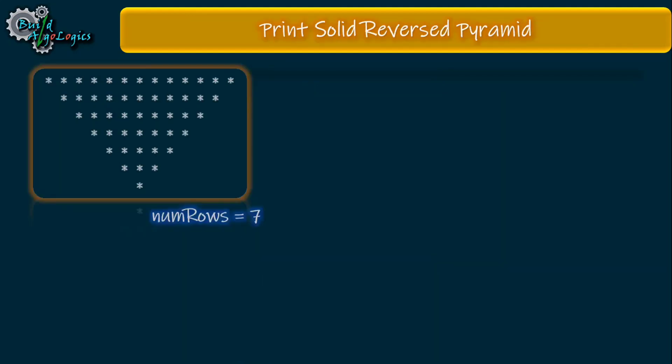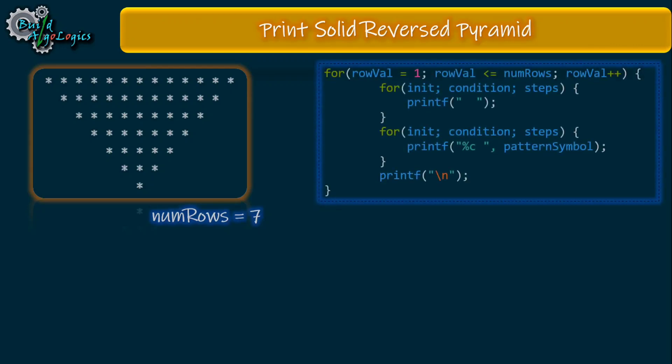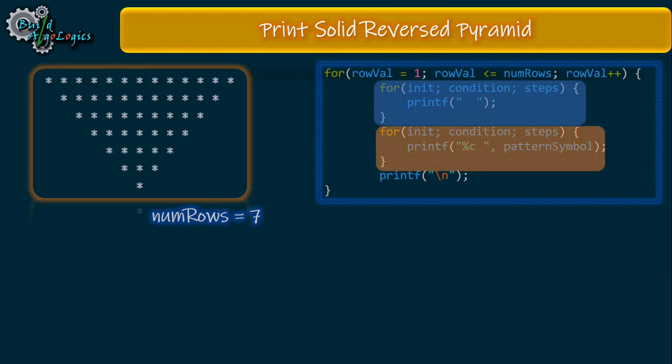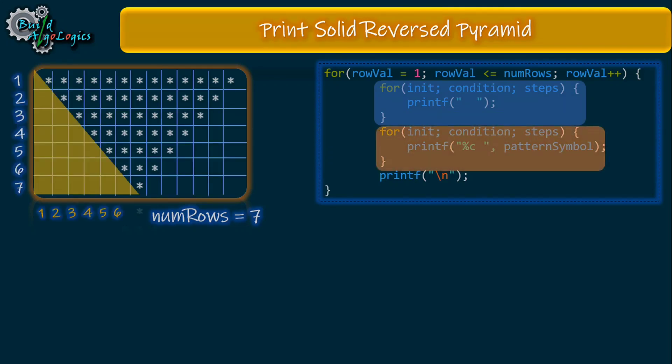In this pattern we'll use two inner loops. The first loop is responsible for printing white spaces and the second inner loop is used for printing our pattern symbols or stars. For printing these spaces, we need to run our first inner loop from 0 to 6. For the first row there is no space printed, for the second row we print one space, and similarly for the third row we're printing two white spaces, and so on.